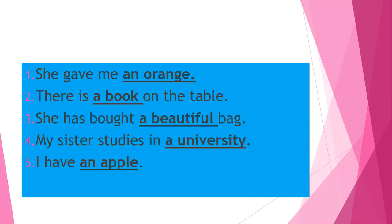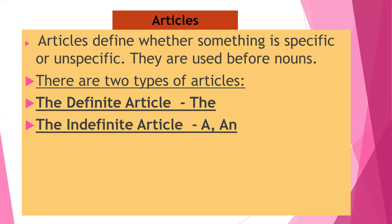But how do we use them? Where do we use them? And what are the rules? So now I am going to tell you. Articles define whether something is specific or unspecific — that means whether the things are particular or not particular. They are used before nouns, and sometimes before adjectives as well, but mostly before nouns. There are two types of articles: the definite and indefinite. 'The' is the definite article and 'a' and 'an' are indefinite articles.